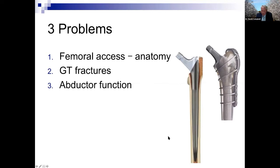In summary, there are three trochanteric problems: femoral access as a function of abnormal anatomy, trochanteric fractures, and abductor function related to tendon pathology or abnormal trochanteric anatomy. Thank you for your attention, I'll hand back to the chairman.